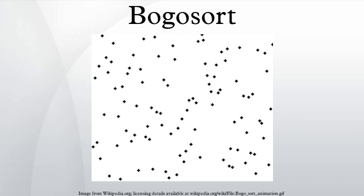The best case occurs if the list as given is already sorted. In this case the expected number of comparisons is minimal, and no swaps at all are carried out. For any collection of fixed size, the expected running time of the algorithm is finite, for much the same reason that the infinite monkey theorem holds. There is some probability of getting the right permutation, so given an unbounded number of tries it will almost surely eventually be chosen.